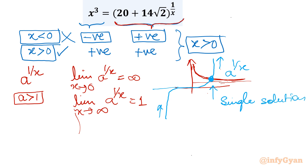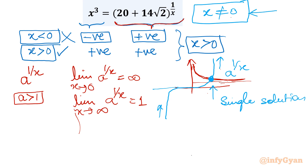Also, x cannot equal 0, because at x = 0 the RHS would be something raised to the power infinity, which is undefined. So we eliminate x = 0 from the domain, and we only need to find the one positive solution.